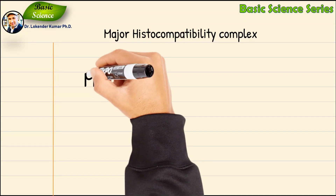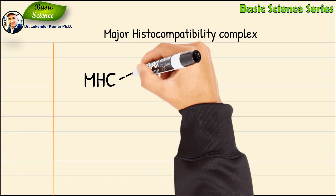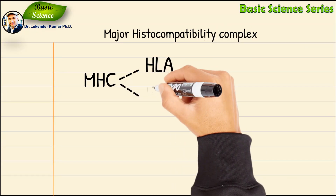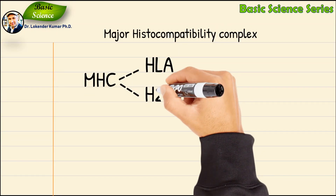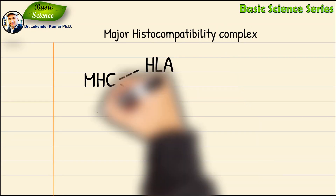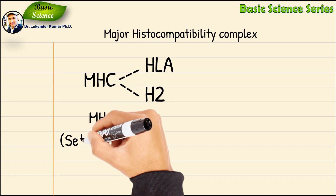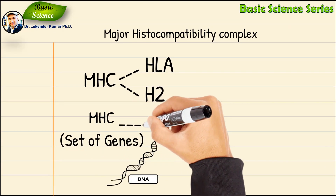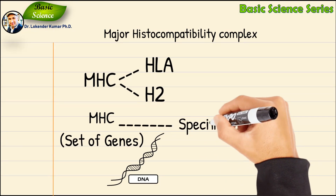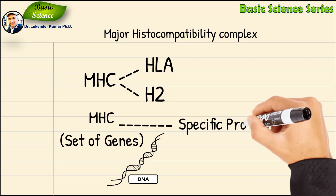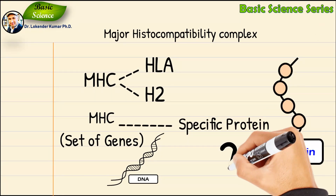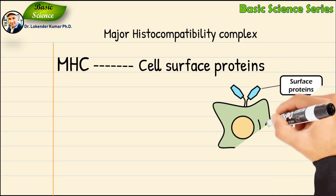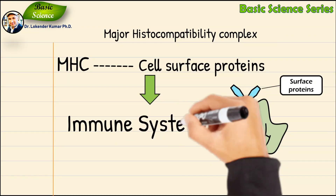The human MHC is called the HLA complex, meaning the human leukocyte antigen complex. The MHC in mice is called the H2 complex. MHC is a set of genes — it is part of our DNA — that encodes specific proteins. The question is: what kinds of proteins do MHC genes encode?